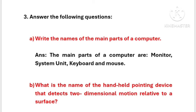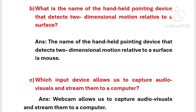Question 3: Answer the following questions. The main parts of a computer are monitor, system unit, keyboard, and mouse. The handheld pointing device that detects two-dimensional motion relative to a surface is the mouse. The input device that allows us to capture audio visuals and stream them to a computer is the webcam.